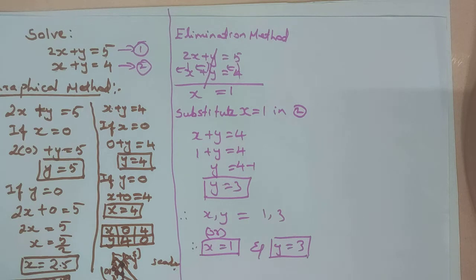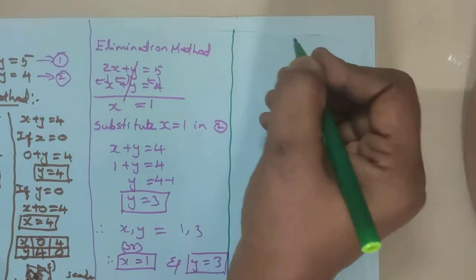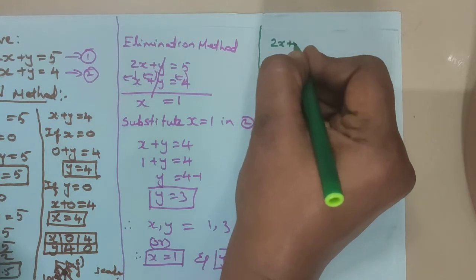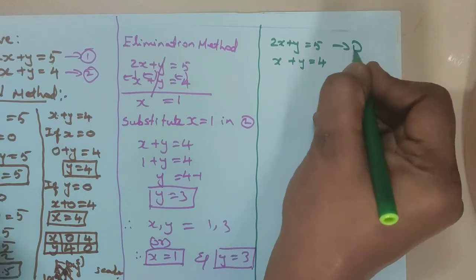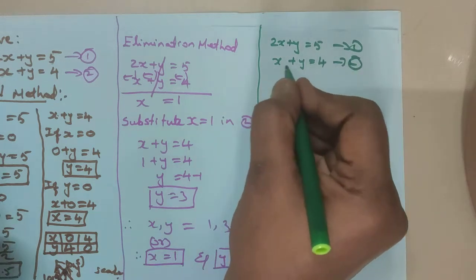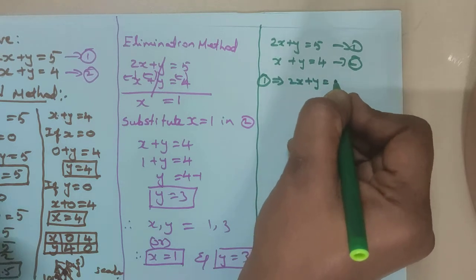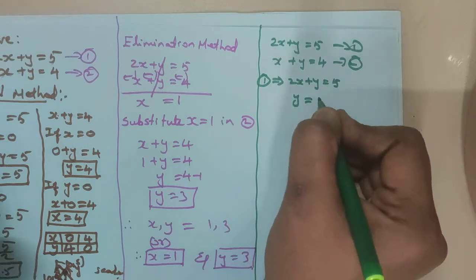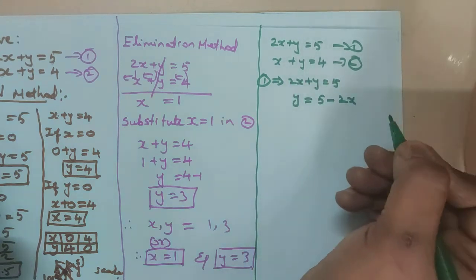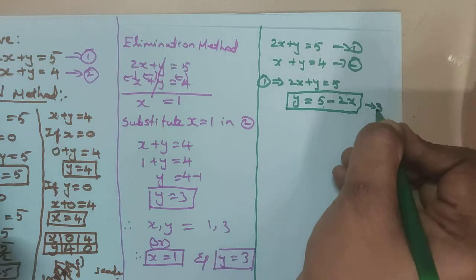Now, substitution method. This is also very simple. Write the equations: 2x plus y is equal to 5 — first equation — and x plus y is equal to 4 — second equation. Take the first equation: 2x plus y is equal to 5. Keep y on one side; bring the other term to the right side. So y is equal to 5 minus 2x. Consider this as equation number 3.